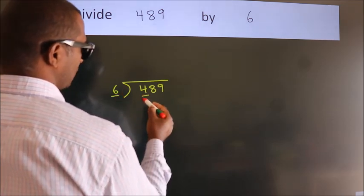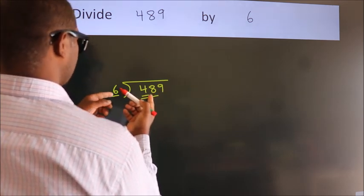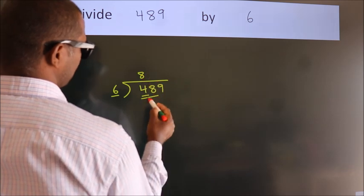So we should take two numbers: 48. When do we get 48 in the 6 table? Six eights are 48.